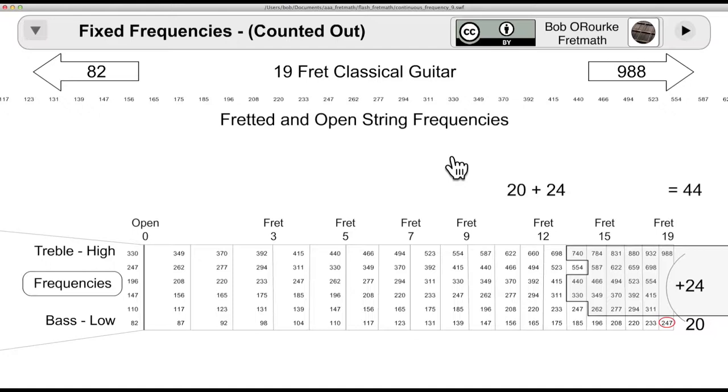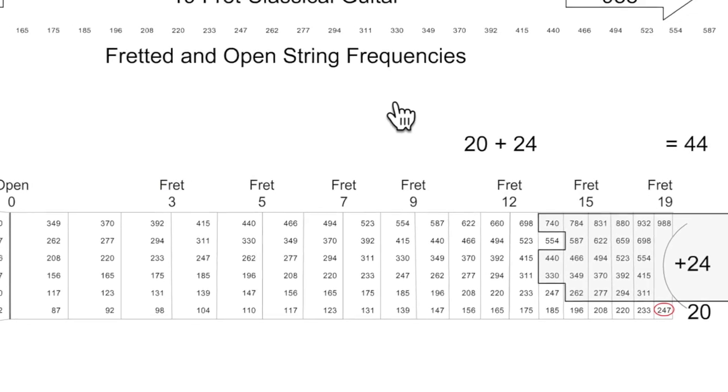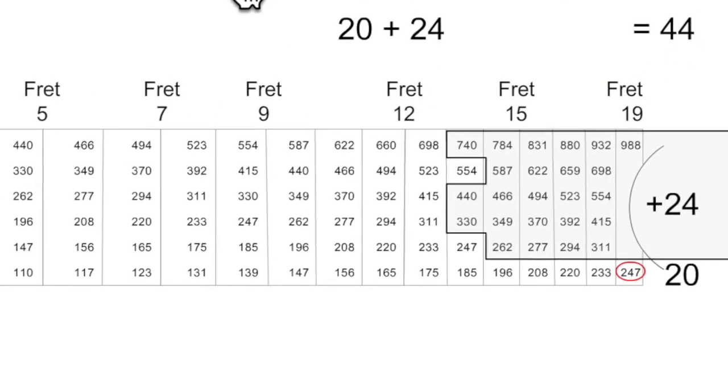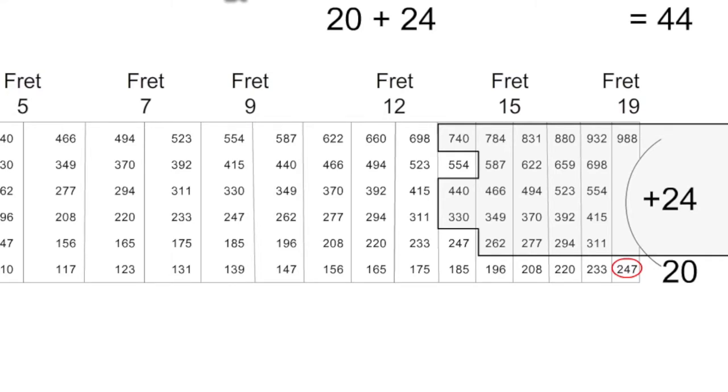So I'll show you how I got that number. You start out with the low E string, and there's 19 frets plus the open string. That gives you 20 notes. And then within the range of a single hand, you have to be able to play all these notes. So within four or five frets there, you have another 24 notes. And that gives you 44 unique notes, and everything else is duplicate.